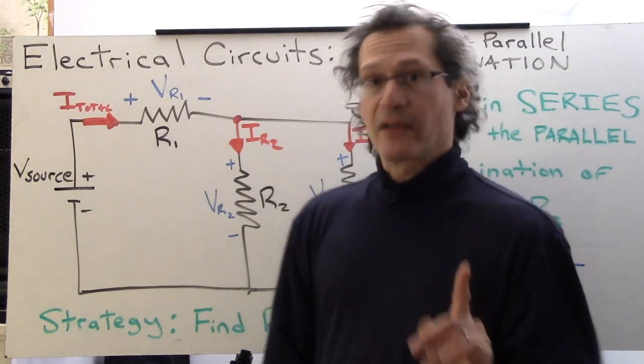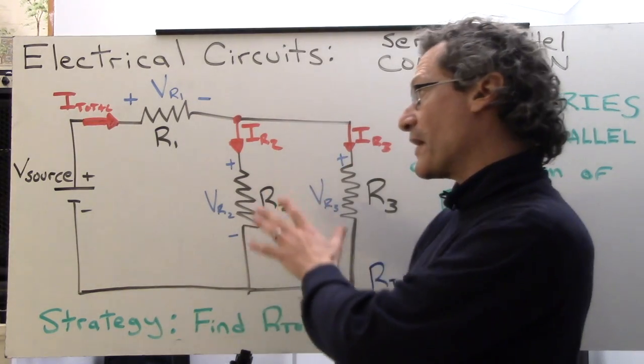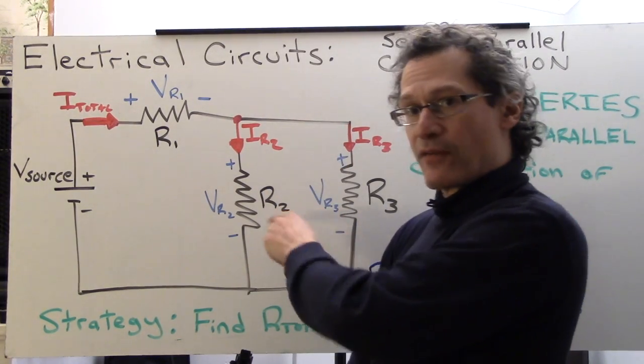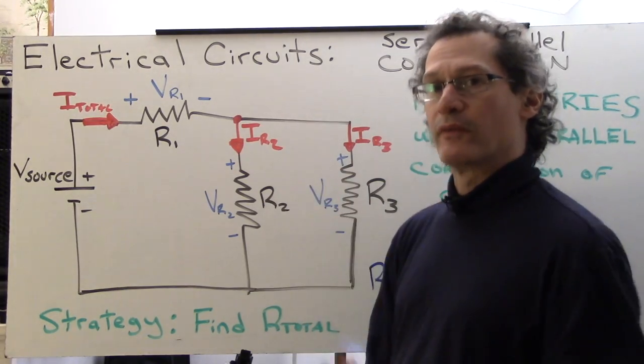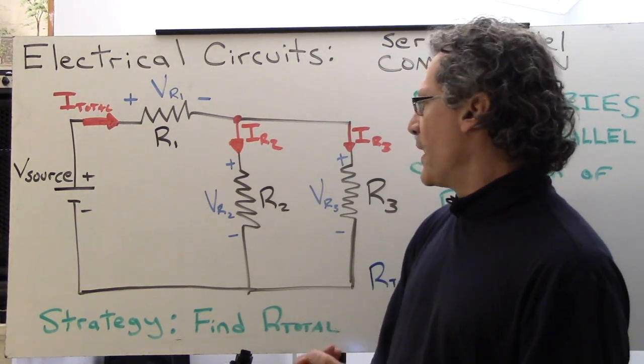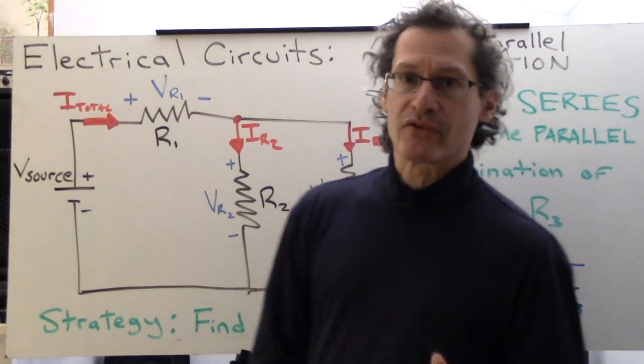Our second gut check says that this segment over here, the total resistance of R2 and R3, just this section over here. If we were to squish this down into one equivalent resistor, it'll be less than either of these two values.